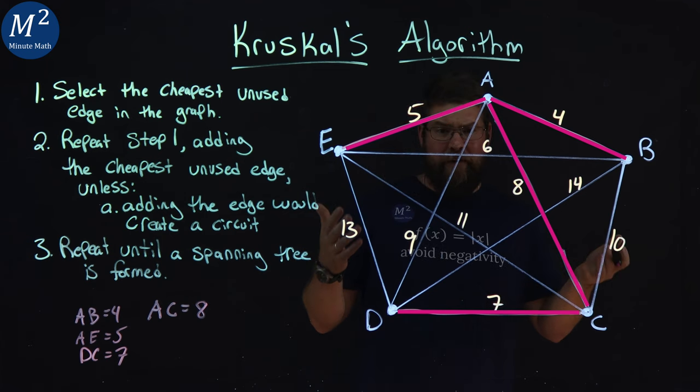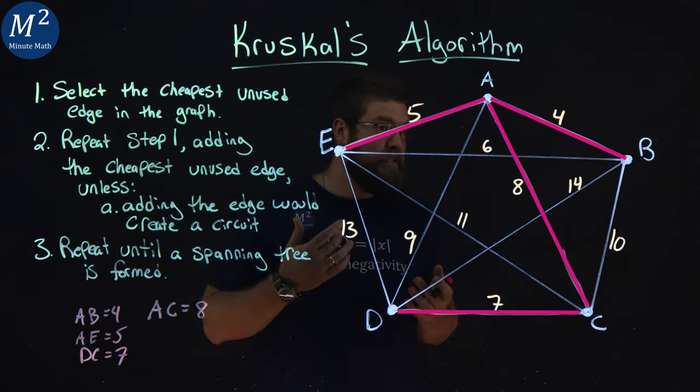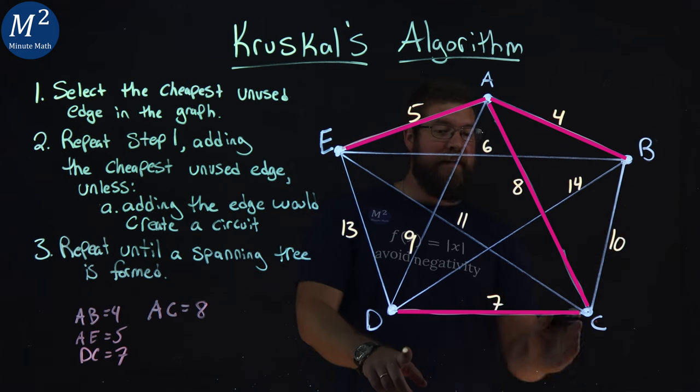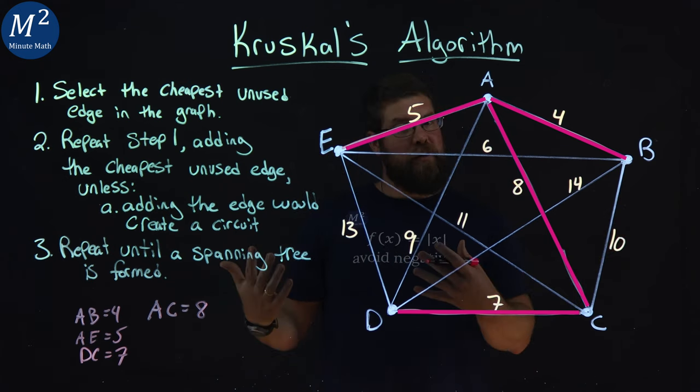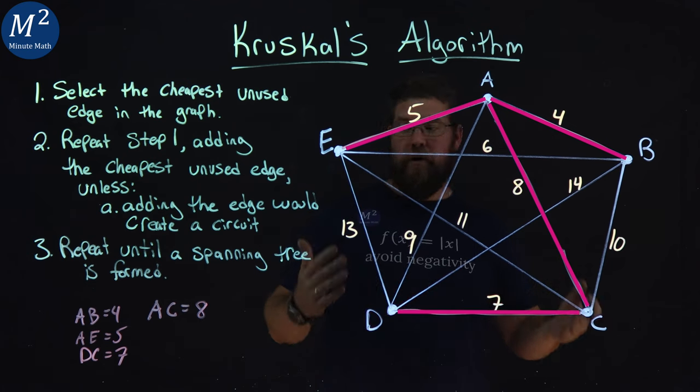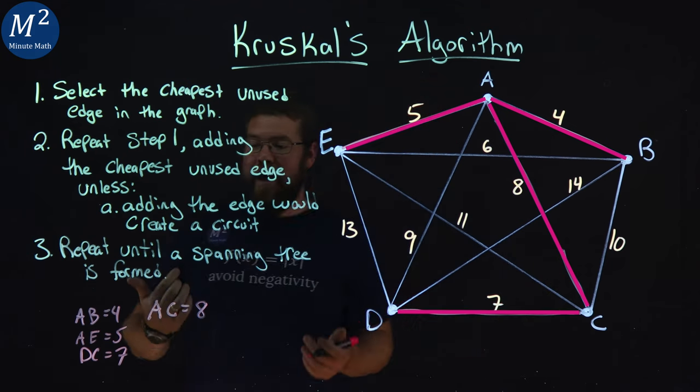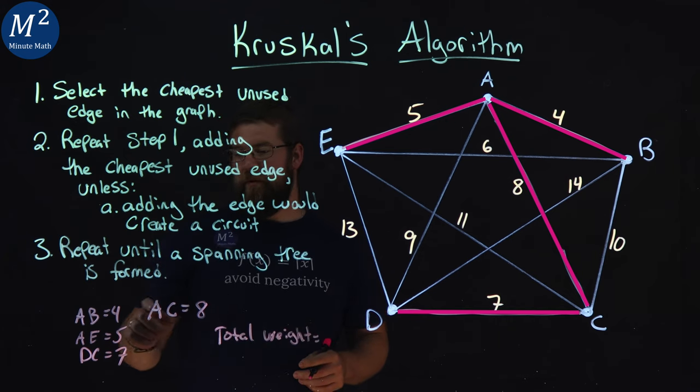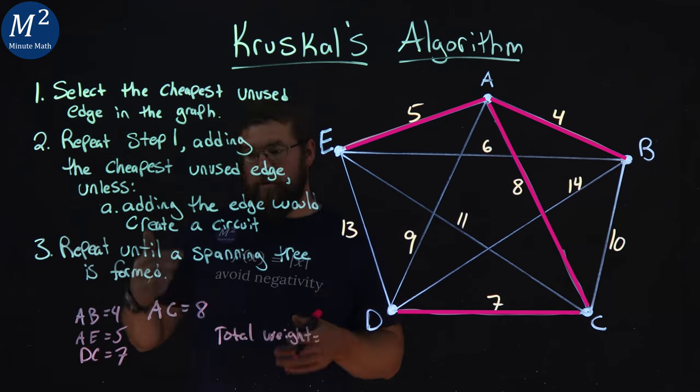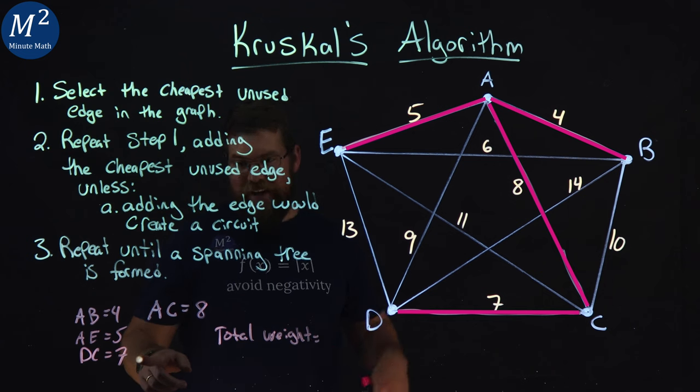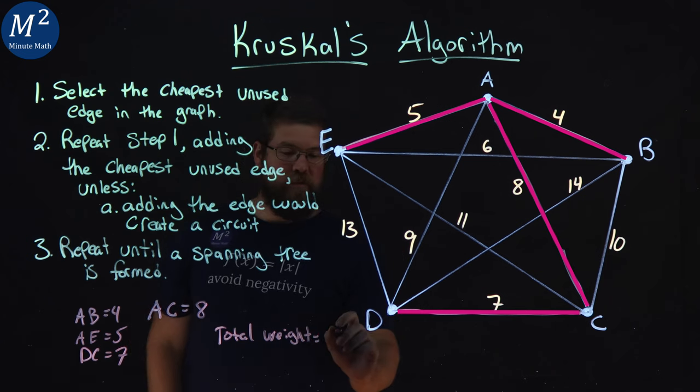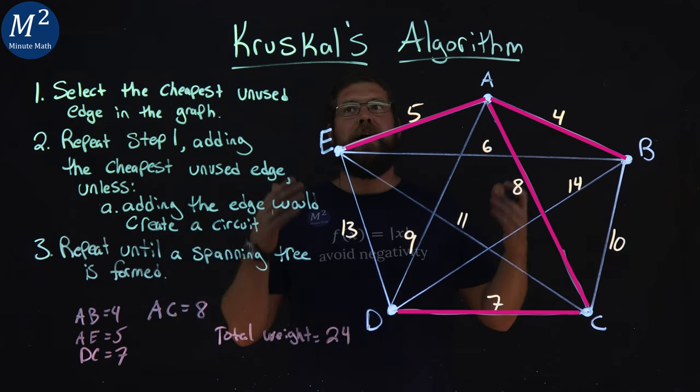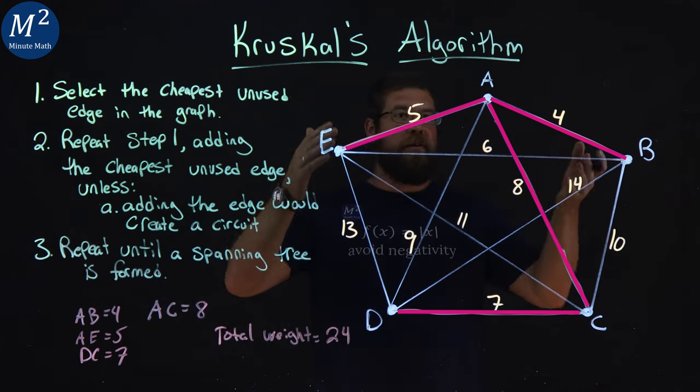And now we have actually created our minimum cost spanning tree. We have hit every single vertex. We are connected to every vertex and we haven't created a circuit. We can add up all of these numbers here. The total weight is equal to eight plus four, which gives us twelve, plus seven gives us nineteen, plus five is twenty-four. So we have a total weight here of twenty-four. And we found the minimum cost spanning tree using Kruskal's algorithm.